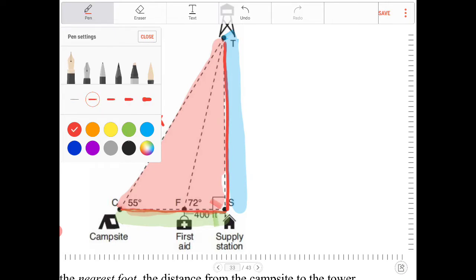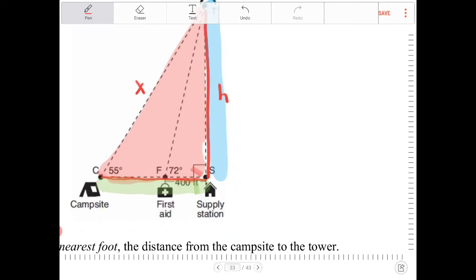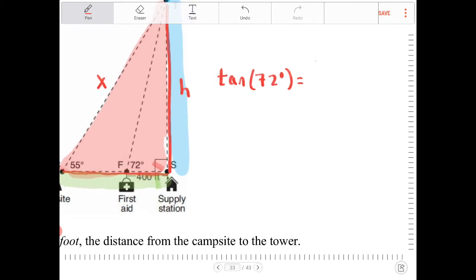So to find out what the length of TS is, I'm going to call TS here H. H happens to be opposite of 72 degrees. And the 400 feet, which is the length of FS, is adjacent to 72 degrees. So which trig ratio will involve an opposite side with an adjacent side? That would be tangent. So tangent of 72 degrees is equal to opposite over adjacent, which is H over 400.